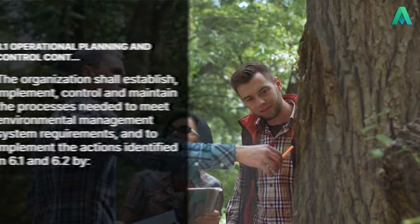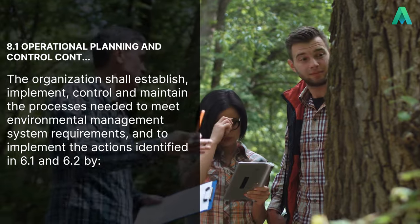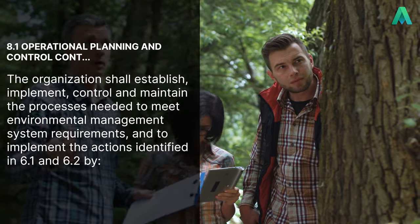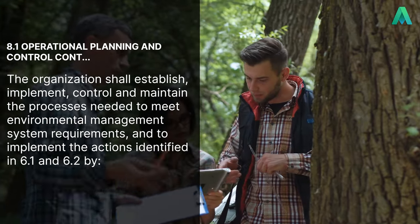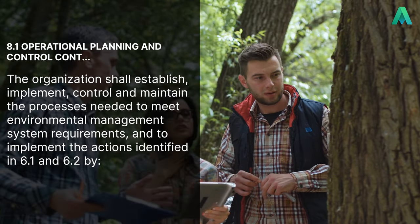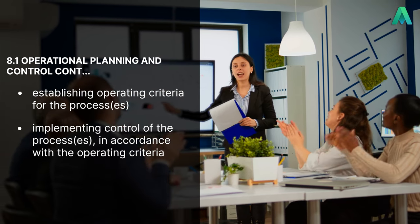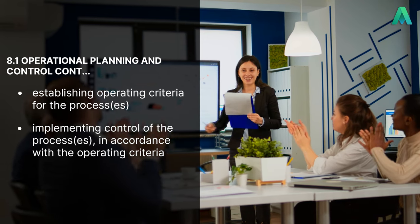Let's take a look at what clause 8.1 wants us to do. First off, the clause states that the organisation shall establish, implement, control and maintain the processes needed to meet environmental management system requirements and to implement the actions identified in 6.1 and 6.2, by establishing operating criteria for the processes and implementing control of the processes in accordance with the operating criteria. This means that the organisation needs to define how the processes will be carried out and the requirements that need to be met to ensure compliance with EMS requirements.